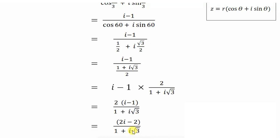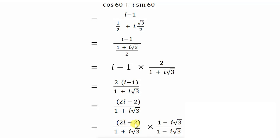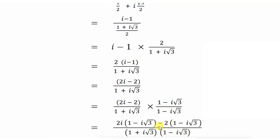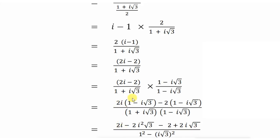We cannot have iota in the denominator, so we rationalize by multiplying and dividing by the conjugate 1 − i√3. Expanding the numerator: 2i × 1 = 2i, and 2i × i√3 = −2i²√3, and −2 × 1 = −2, and −2 × (−i√3) = +2i√3.